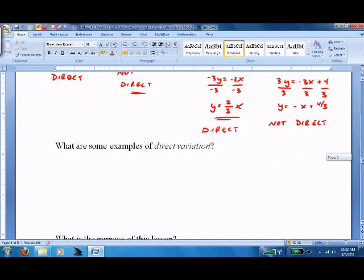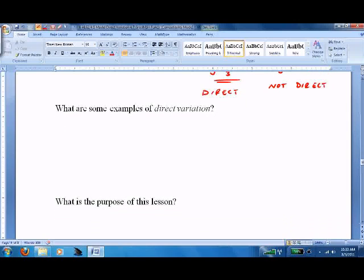So when you graph them, it's pretty easy. Y-intercept zero, so your first point is always zero, zero. What are some examples of direct variation? Well, the one that most people know is your pay is directly affected by the number of hours you work.